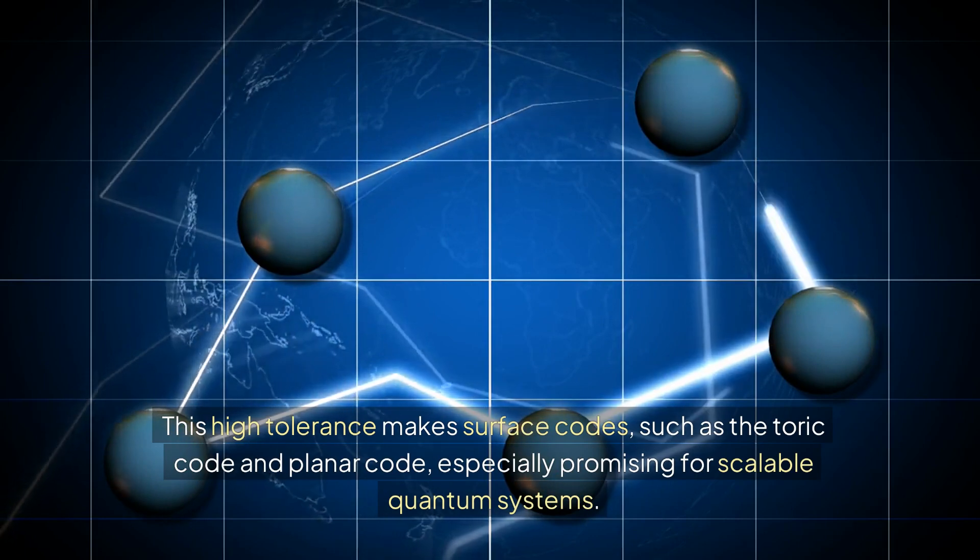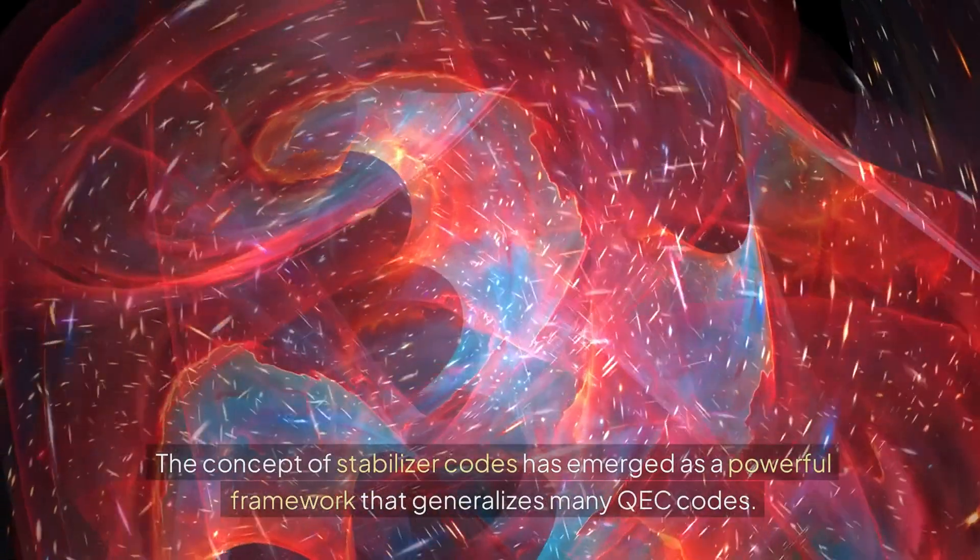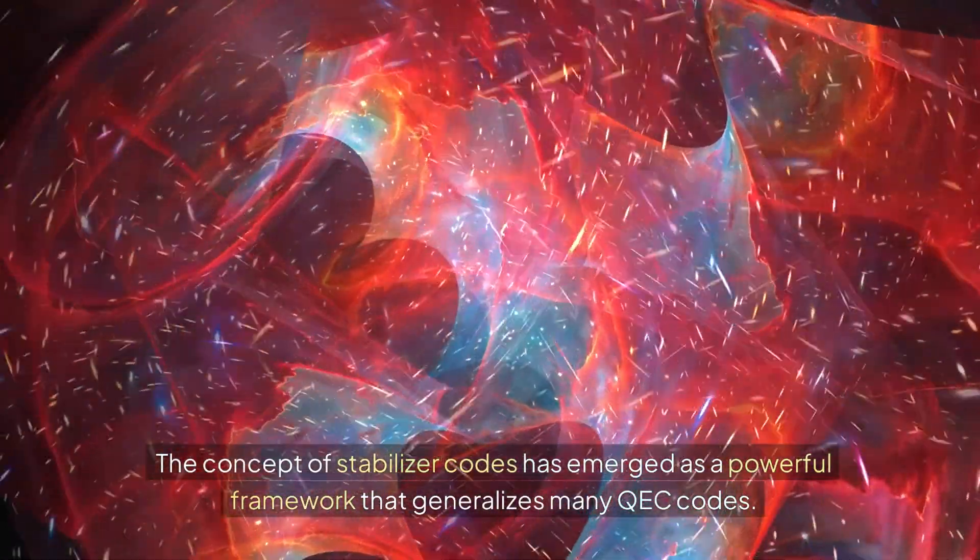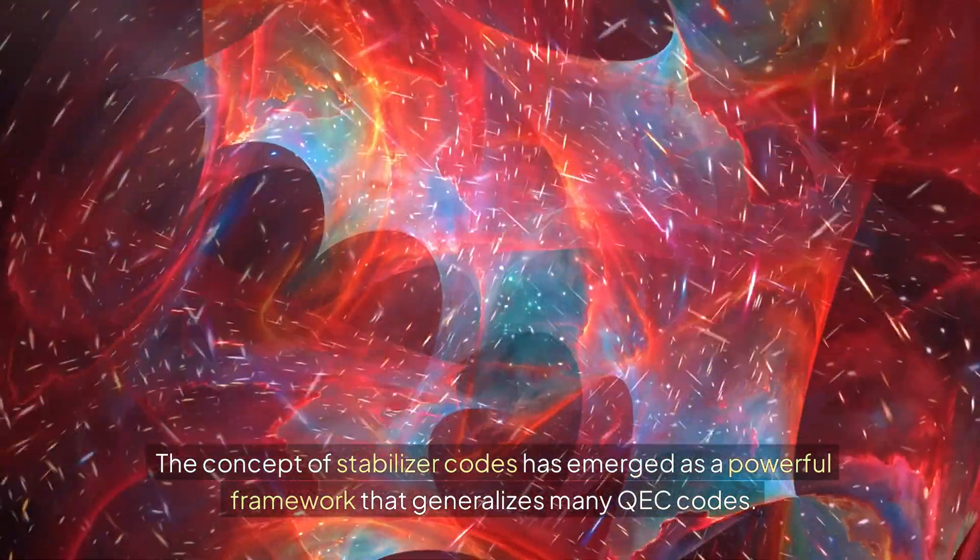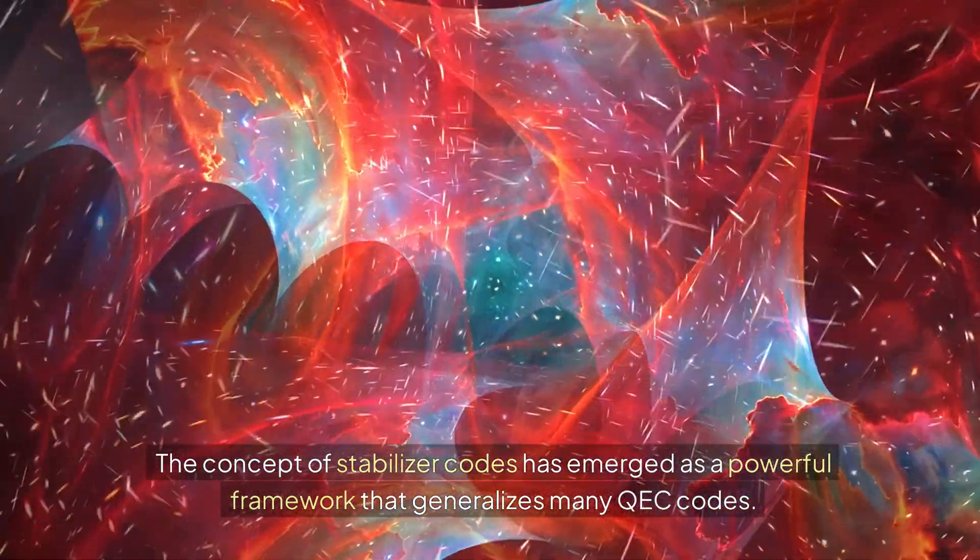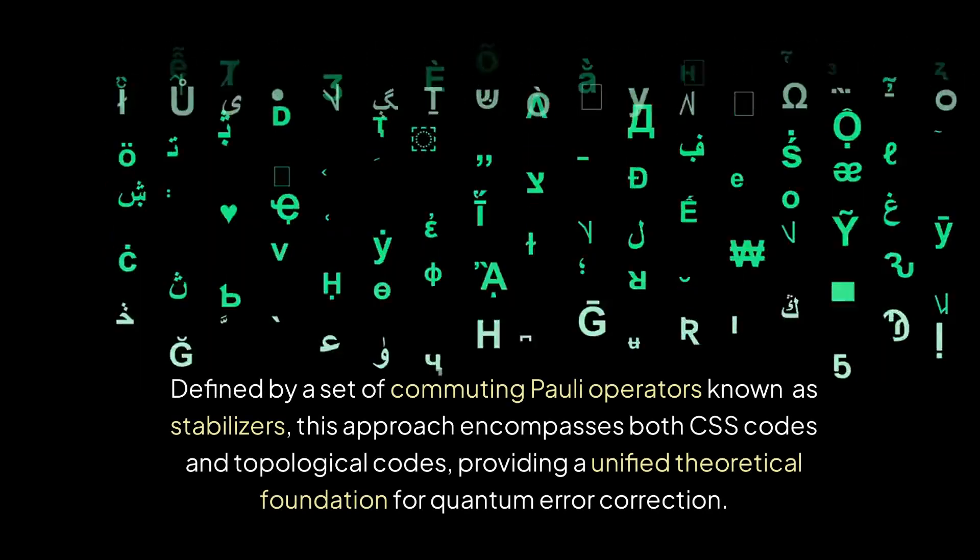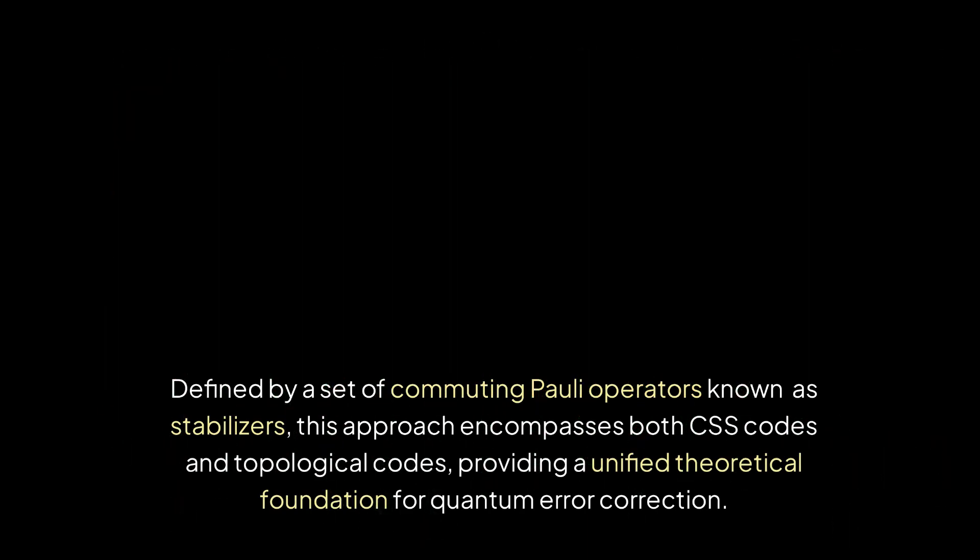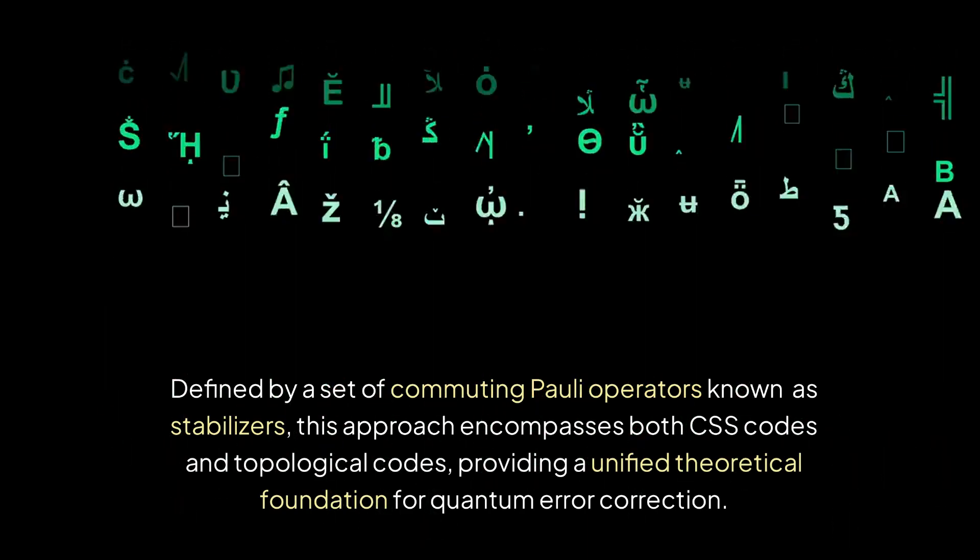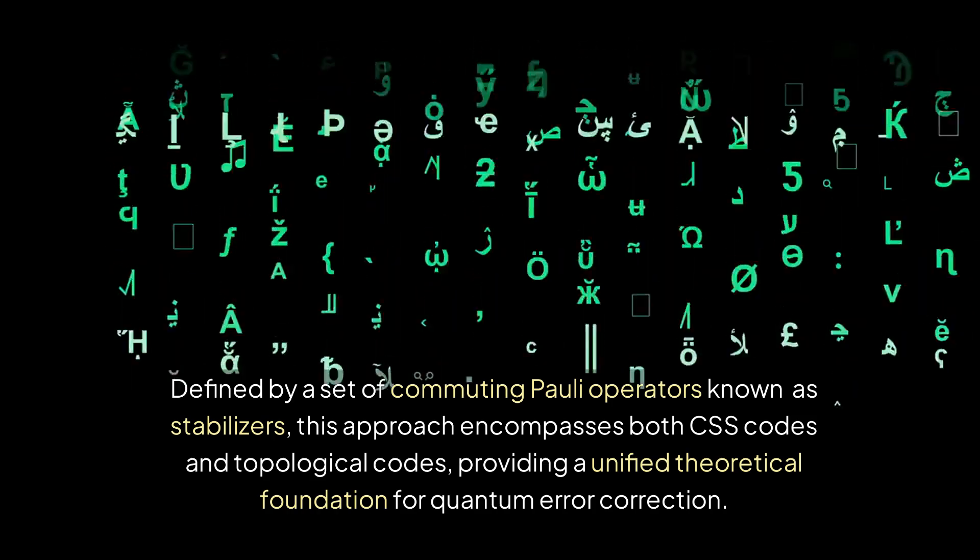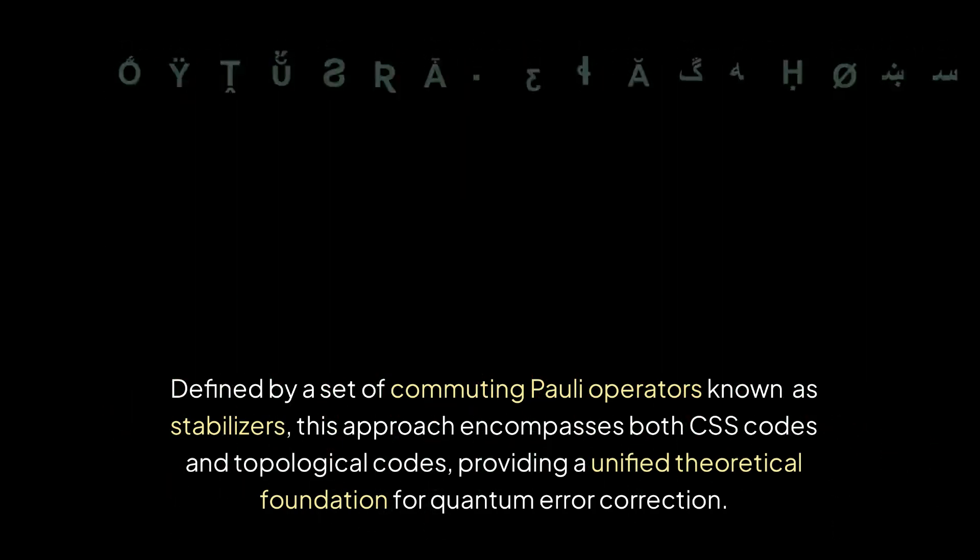The concept of stabilizer codes has emerged as a powerful framework that generalizes many QEC codes. Defined by a set of commuting poly operators known as stabilizers, this approach encompasses both CSS codes and topological codes, providing a unified theoretical foundation for quantum error correction.